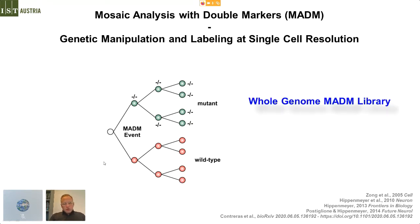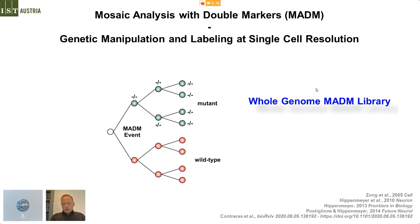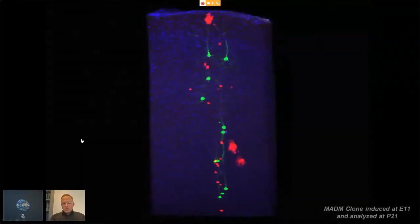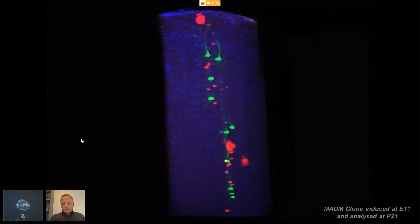Another property of the MADAM system is that you can also introduce genetic mutations, very precisely and only specifically in one of the lineages — for instance in the green lineage — introduce a mutation for a given candidate gene of interest, and compare directly in vivo what happens to these mutant cells when you compare them to wild-type cells labelled in the other colour. For the last 10 years or so, we really have taken a huge effort to actually generate a whole genome MADAM library, which would allow you to study any given candidate gene of interest.